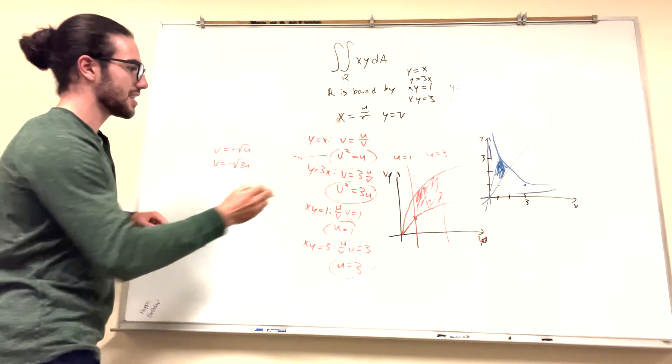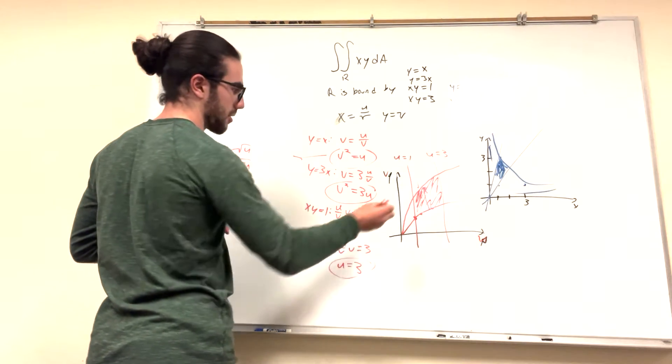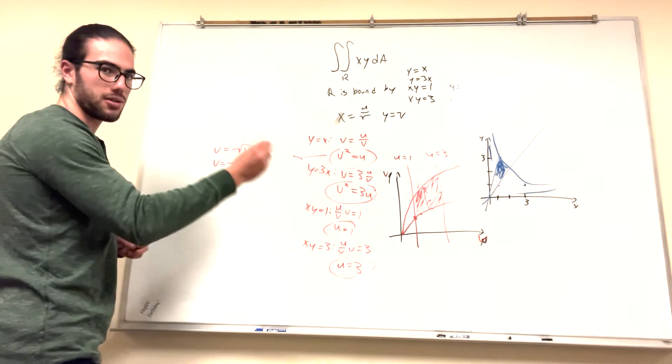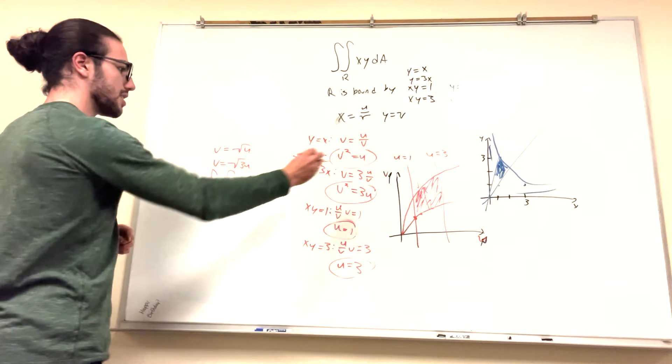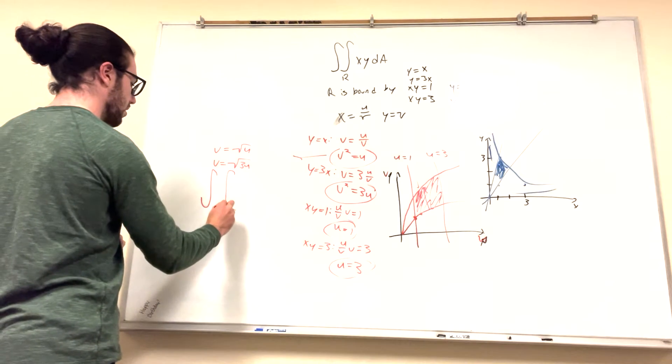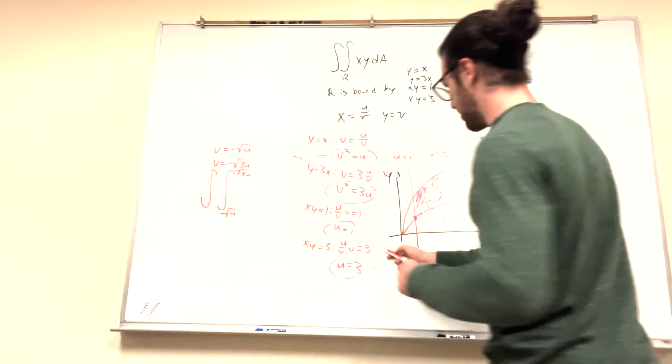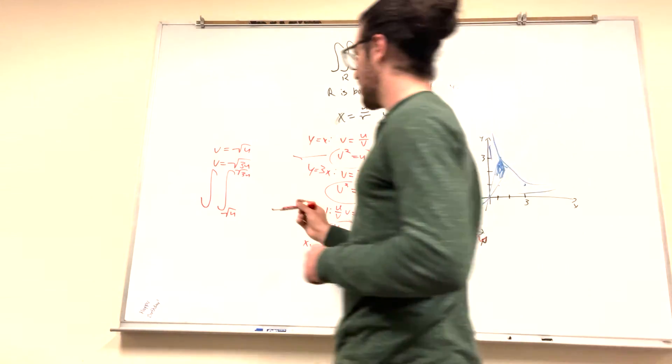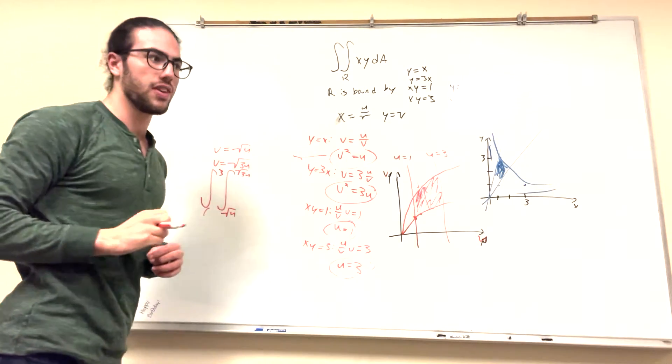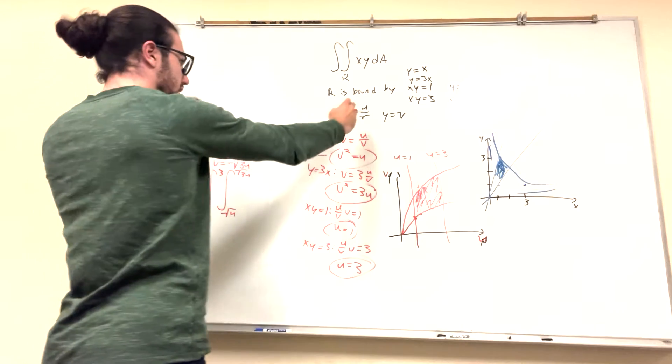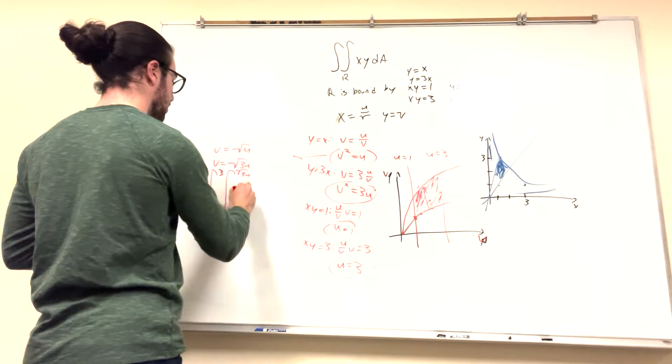So we have these. This is basically like, this is this line, square root of u. And this is square root of 3u. And it's going between those two. So our integral is going to look like, we have our double integral. So it's going to go from square root of u to square root of 3u. And then our u bounds are going to go from u equals 1 to u equals 3. And then we have to rewrite this in terms of u and v, because we're solving in u and v. So it's u times v times v, which is just going to become u. But we're missing something. We need the Jacobian.